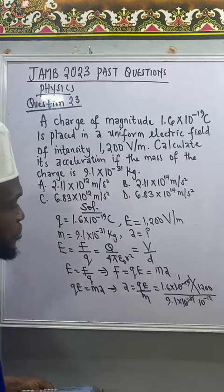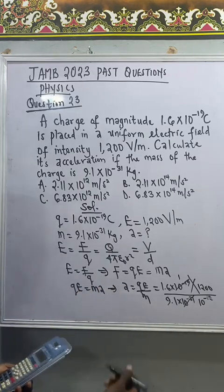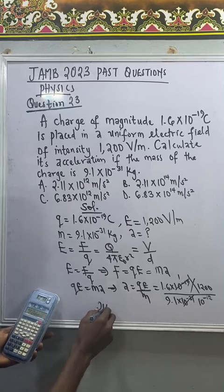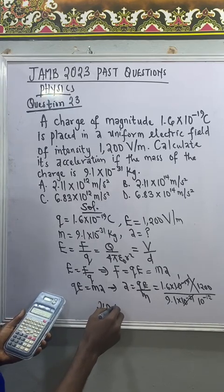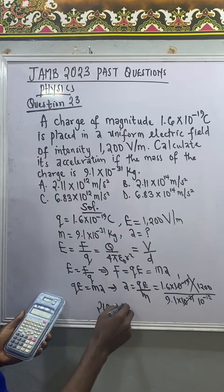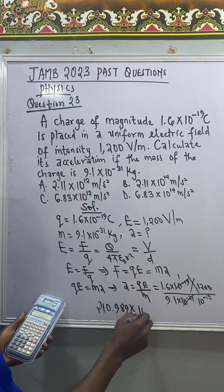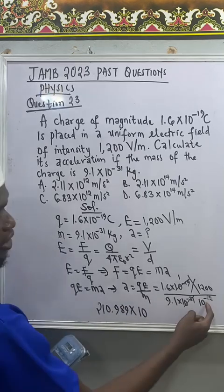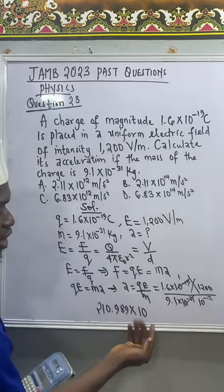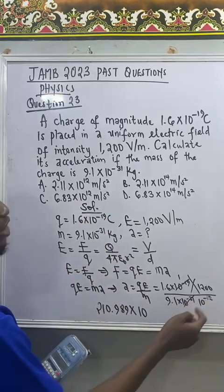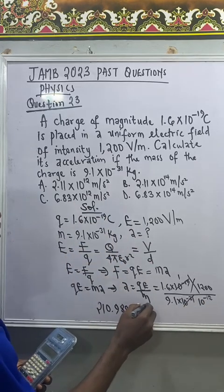210.989 times 10 raised to the power of, normally we have 10 raised to power minus 12 on that, but if I bring it up a negative will become positive, 10 raised to power 12.